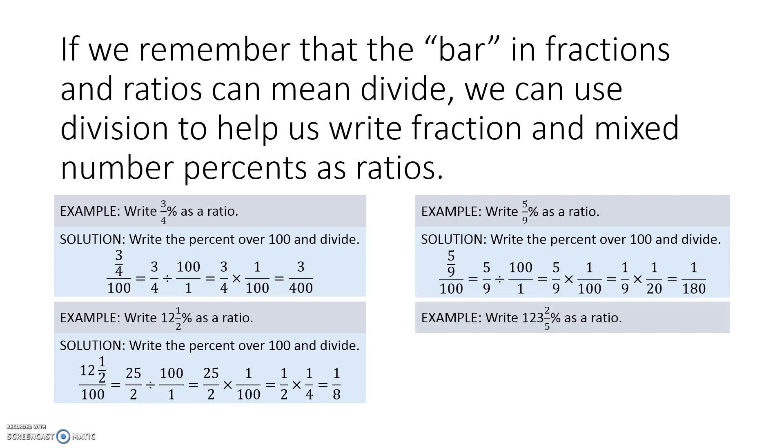Let's do our last example. Write 123 2/5 percent as a ratio. Same thing. Write the 123 2/5 over 100. But again, 123 2/5 is a mixed number. So change it to an improper fraction, which is 617 over 5. And divide that by 100 over 1. Division, we apply KFC. So we have 617/5 times 1/100. We have no common factors to cross cancel. So we just multiply and we get 617 to 500 as the ratio for 123 2/5 percent.